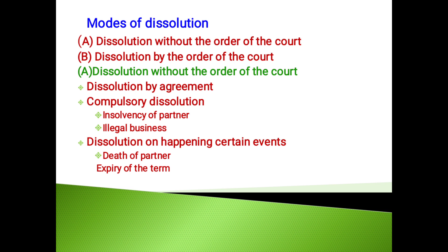Contingent dissolution: in case there is no agreement among the partners regarding certain contingencies, the partnership firm will be dissolved on the happening of any of the following situations. The death of a partner — if the partnership firm is dissolved on the death of any one partner. Expiry of term — the partner firm may be for a fixed period, and on the expiry of that period, the firm will be dissolved.